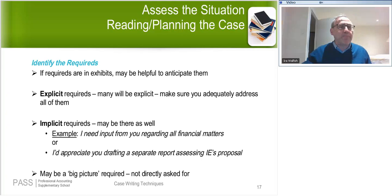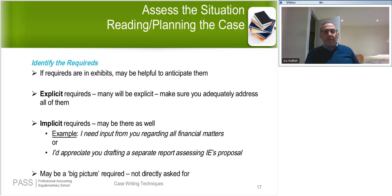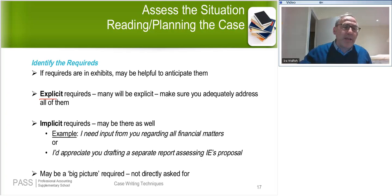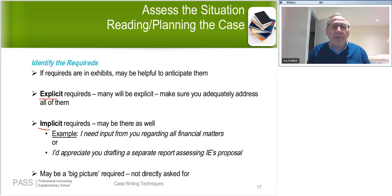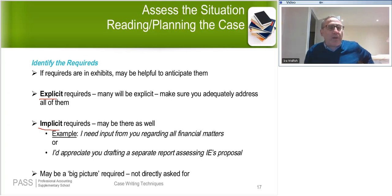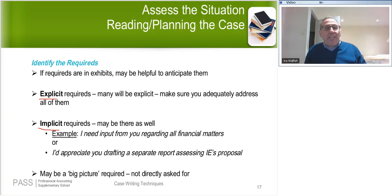When identifying the required: some are explicit — they say do A, do B, and do C. Make sure you address every required. If you fail to address a required, you'll lose at least one assessment opportunity and get not addressed. You can't afford to lose any assessment opportunities. As soon as you decide not to address a required, you're literally writing off some assessment opportunities — a big, big mistake.